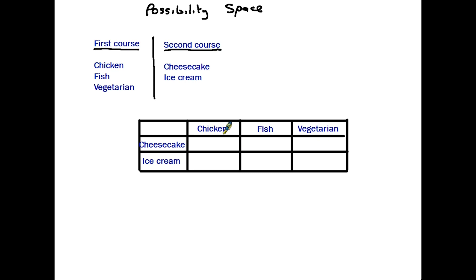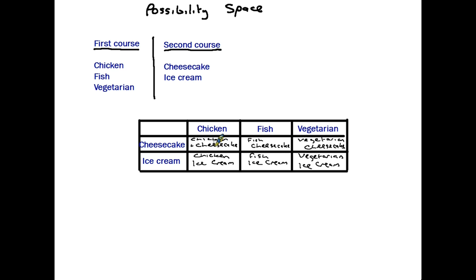Here is our possibility space — it is in fact a two-way table. It has information along the top and also down the side. If we combine the two sets of information we are given the choices. For instance, a guest could ask for chicken for their first course and then cheesecake for their second — that combination would be chicken and cheesecake. Another guest could want the cheesecake but ask for fish as a first course, so their combination would be fish and cheesecake. Once completed, we have every possible combination and we see there are six different combinations.